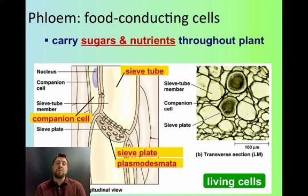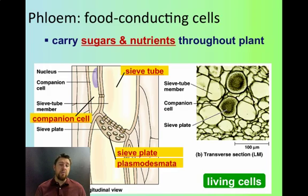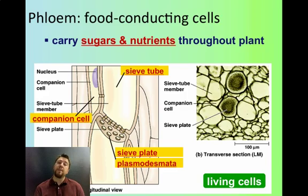Water is transported through the vascular tissue called xylem. Sugars, or food, are transported through the vascular tissue called phloem. Phloem carries nutrients and sugar generally down from the leaves to the stems or the roots, where they'll be stored for later.